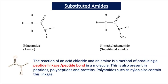When we carry out an ethanoylation reaction, we form a substituted amide rather than a conventional amide. Let's look at the difference between a conventional amide such as ethanamide, and a substituted amide such as N-methyl ethanamide. A conventional amide has an R group attached to a C double bond O and then an NH2 group. Ethanamide is a conventional amide because we have a CH3 group attached to a C double bond O and then an NH2.